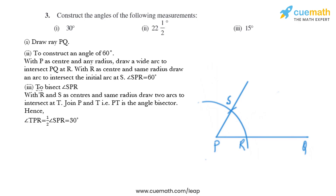We have angle SPR as 60 degrees. To bisect angle SPR: with R and S as centers and the same radius, draw two arcs intersecting at T. Join PT — PT is the angle bisector — so angle TPR equals half of angle SPR, which is 30 degrees. We put the compass at S, draw an arc, then at R to draw another arc, name the intersection T, and join P and T.